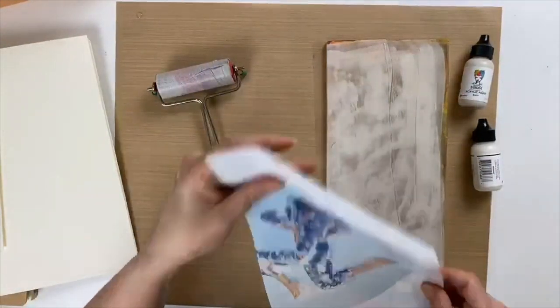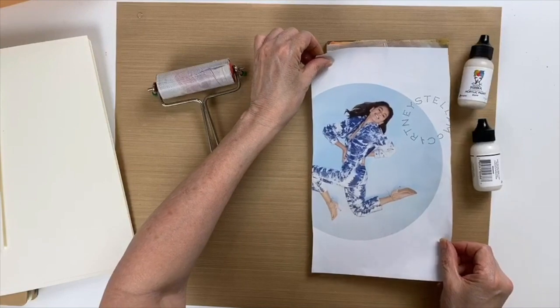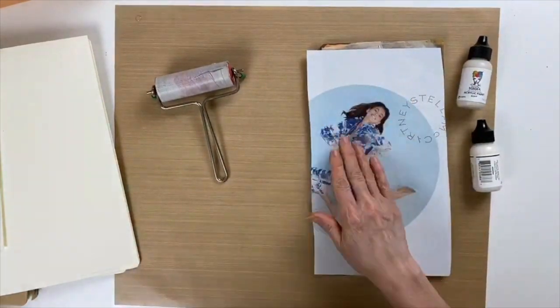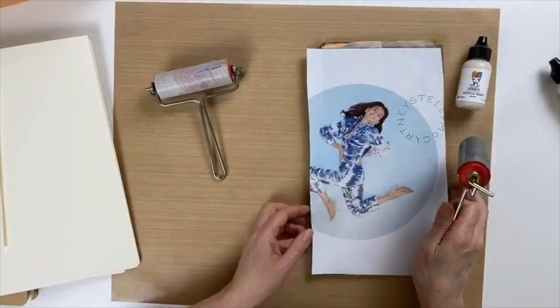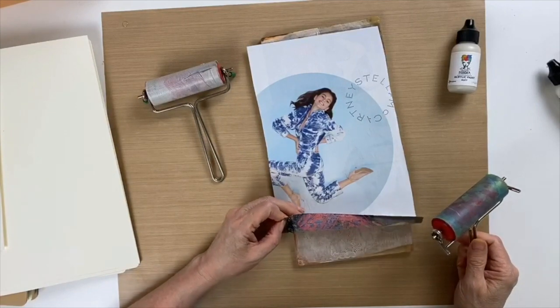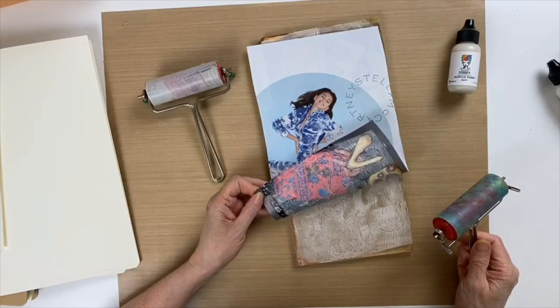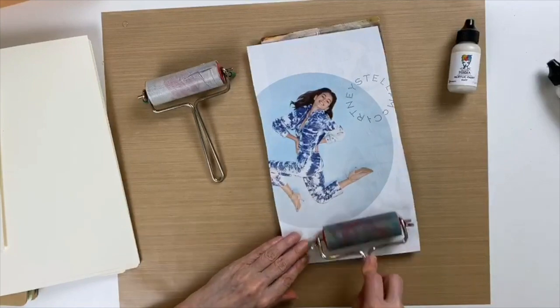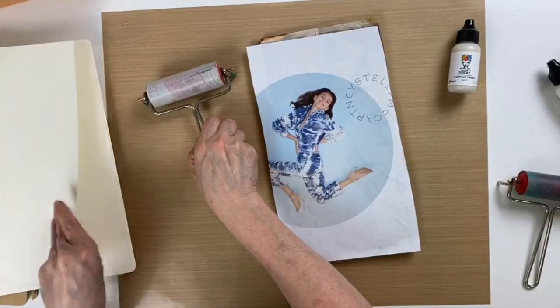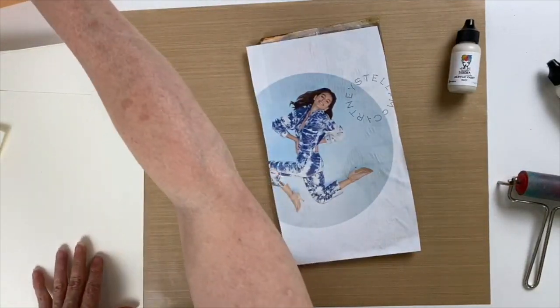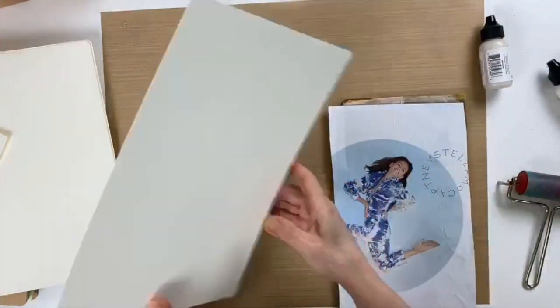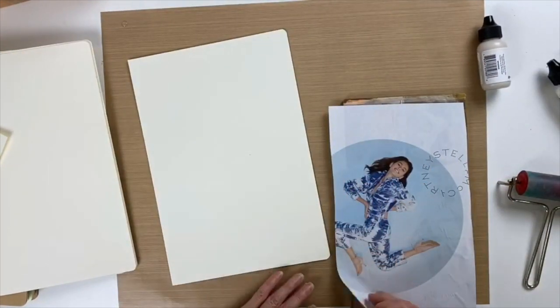And now I'm going to put the image face down on the gel plate. And then I'm just rubbing it on there and I'm taking a clean brayer and just making sure all the paint sticks to the image. Just like that. And then I'm going to take the dirty brayer and just put it in a bucket of water so that the paint doesn't dry on there.